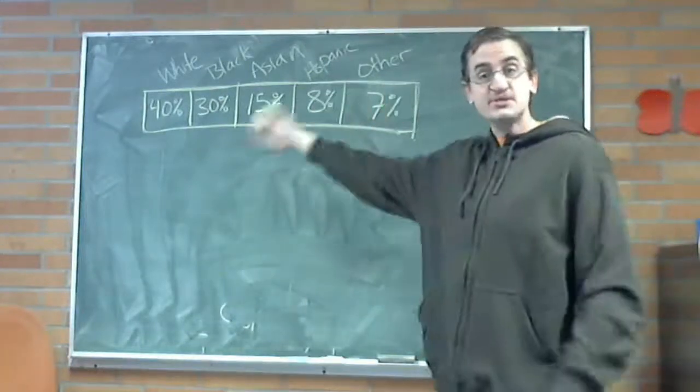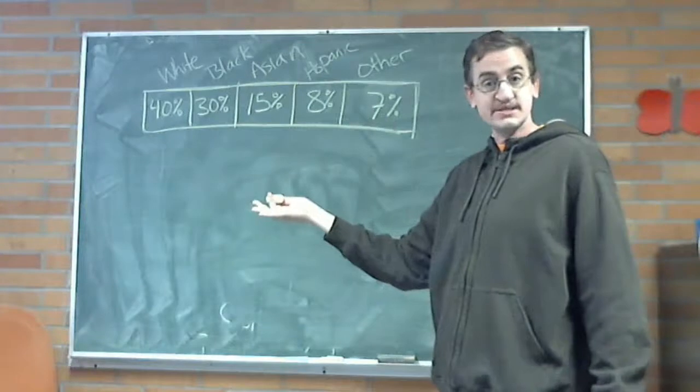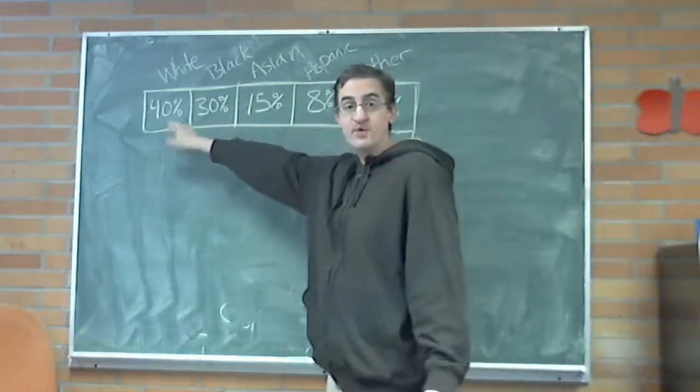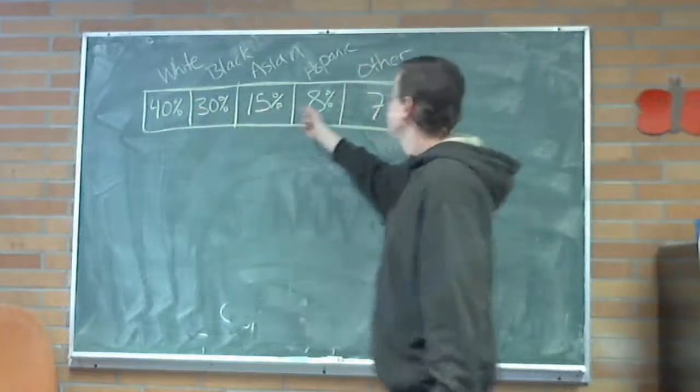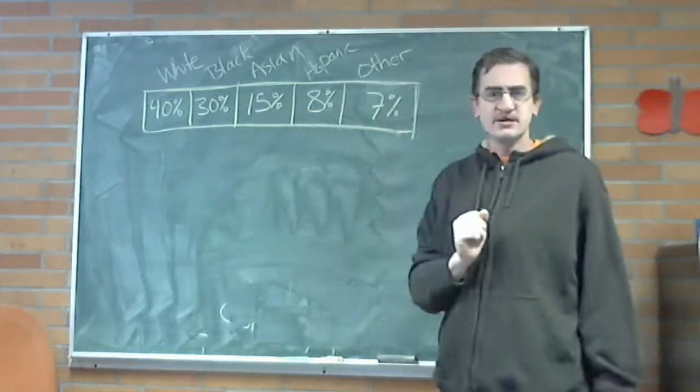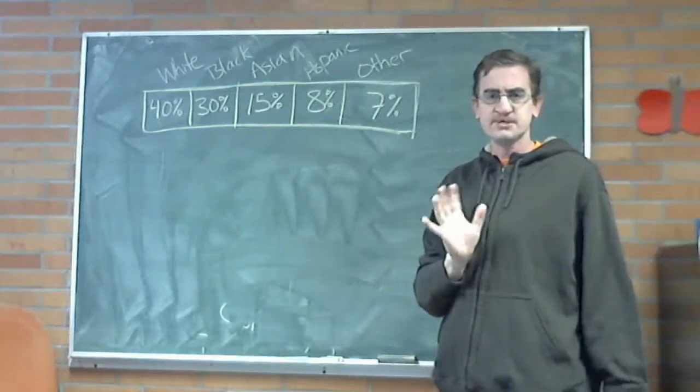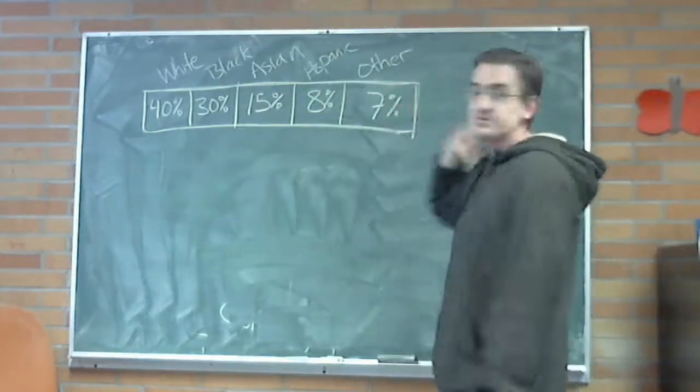Here is our scenario that we are going to try to work with. At an airport, these are the percentages of different types of races that you can see going through the airport at any given time. 40% of them will be white, 30% black, 15% Asian, 8% Hispanic. According to ask.com, these are the proper politically correct ways to refer to races. If you are offended, I am really sorry, I tried to look that up. 7% for everybody else.